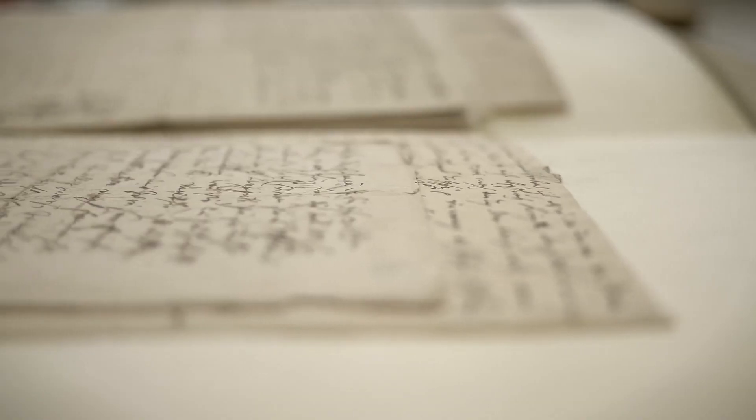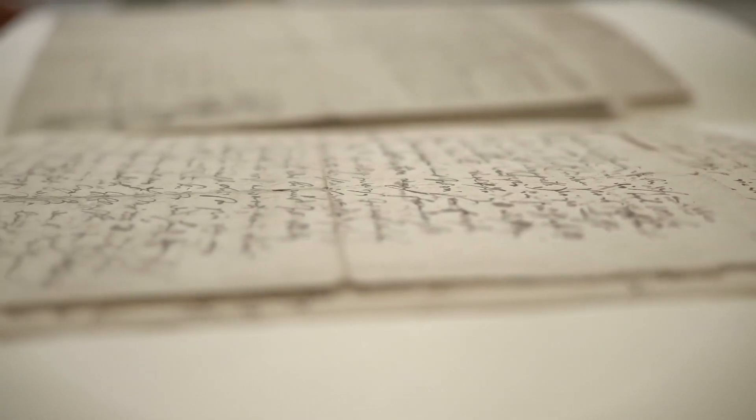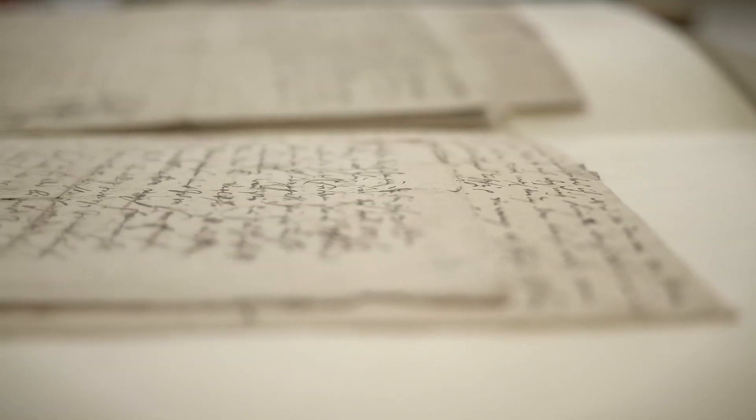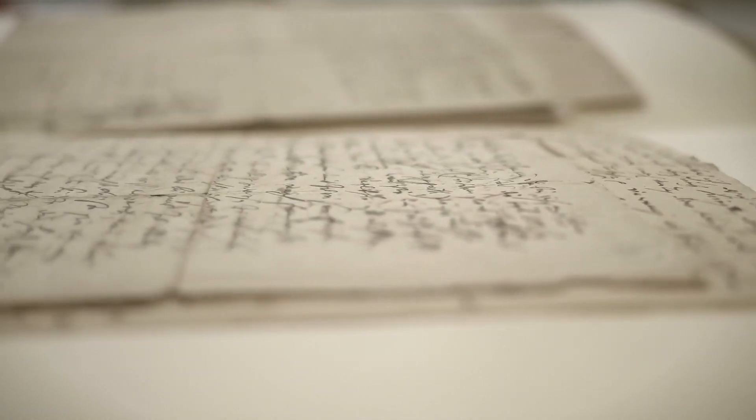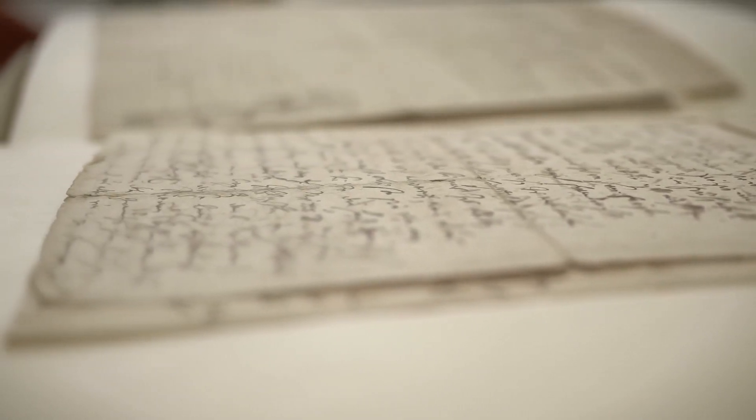The process of handwriting analysis forensics typically involves the following steps. One: Collection of handwriting samples. Investigators collect known handwriting samples from the suspected author, such as recent writings, signatures, or previous documents.